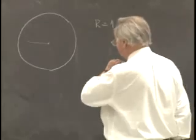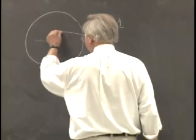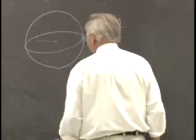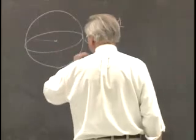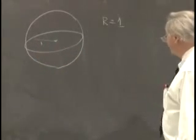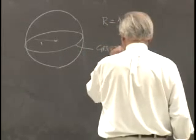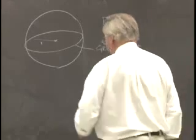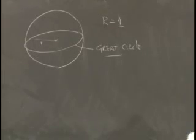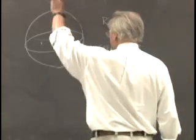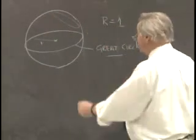If we pass a plane through that sphere, it will intersect it in a circle. If the plane passes through the center of the sphere and we've assigned the radius as unity, then this is a circle referred to as a great circle — it's simply saying that's as large as the circle is going to get. If you take any other plane which intersects the sphere but doesn't pass through the center, it's going to have a smaller radius. This is called a small circle.